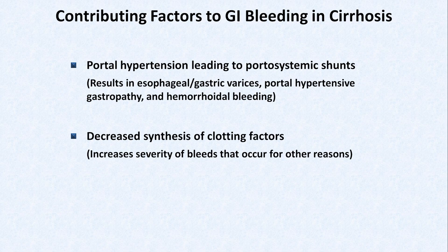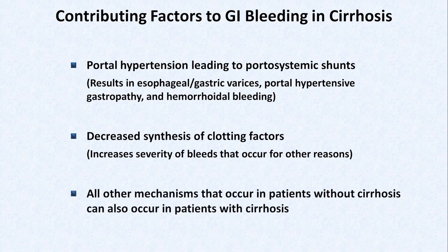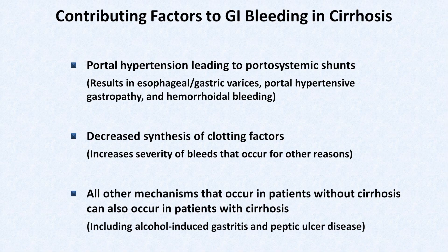Remember that all other mechanisms that occur in patients without cirrhosis can also occur in patients with cirrhosis. In my personal experience, the most common scenario is a patient with alcoholic cirrhosis presenting with an upper GI bleed, where you work on the assumption that it may be from esophageal varices, but when the patient receives endoscopy, it's discovered to be something like alcohol-induced gastritis.